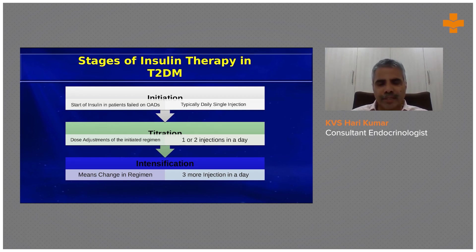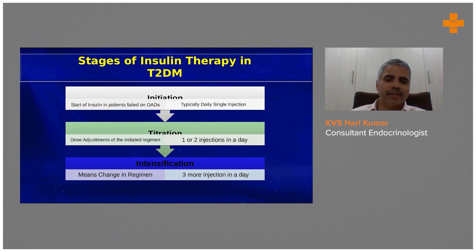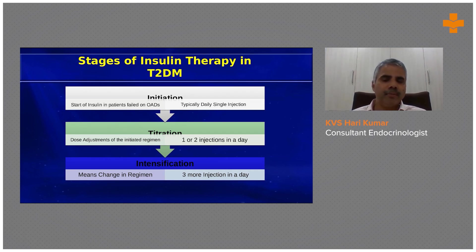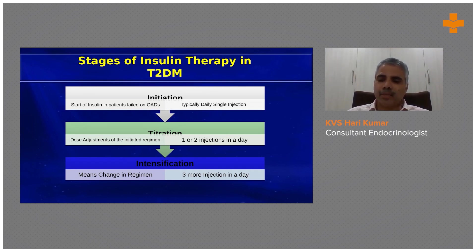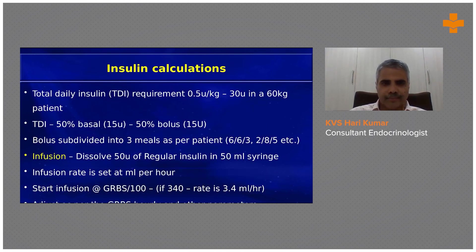When looking at the stages of insulin therapy, we first initiate, then titrate, and then intensify — these are the three steps in insulin management. Initiation starts someone who requires insulin on basal-bolus, pre-mix, or infusion depending on glucose values. This is the most important slide for glucose management in the COVID setting.